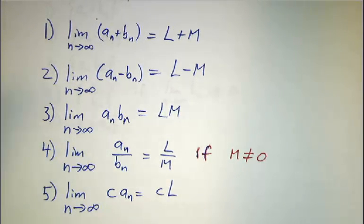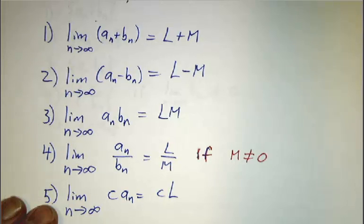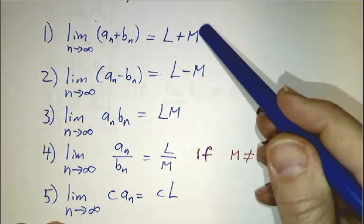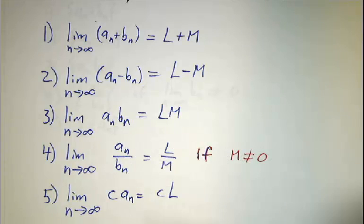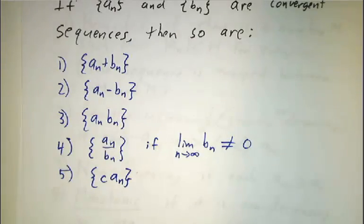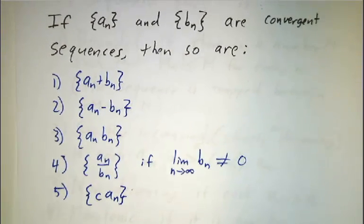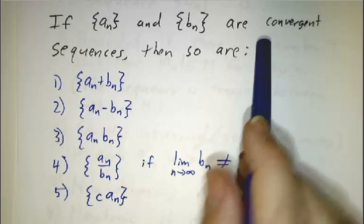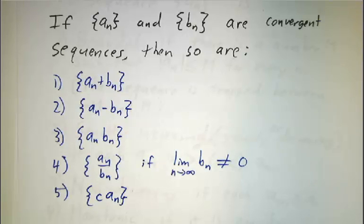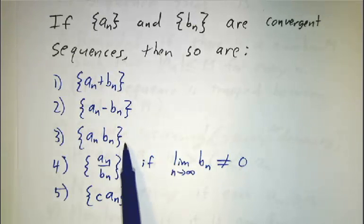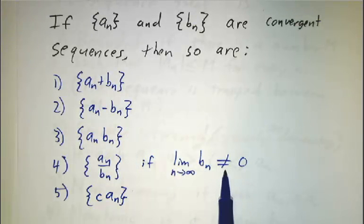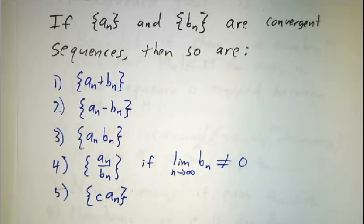If sequences a and b each converge, then a plus b converges, a minus b converges, a times b converges, a over b converges (as long as you're not dividing by things that are close to zero), and a constant times a converges. If we have two sequences and they are both convergent, then so are their sum, their difference, their product, their ratio, and the scalar multiple of the first one.